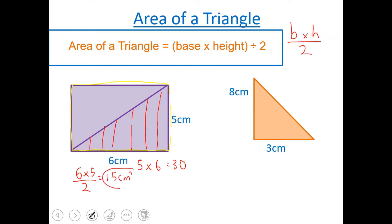centimeters squared. Please remember the squared sign — that's the answer for this triangle. For this triangle it's going to be exactly the same: base times height divided by 2. The base is 3, the height is 8, and we divide by 2. So 3 times 8 is 24, divided by 2, which is going to be 12 centimeters squared.